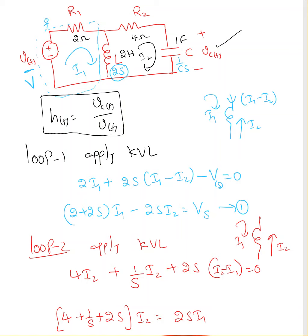So, loop 1, apply KVL. So if I take loop 1, this given voltage, I'm taking that as V of S, output voltage as Vc.